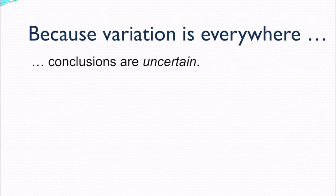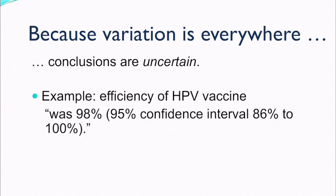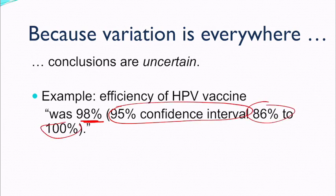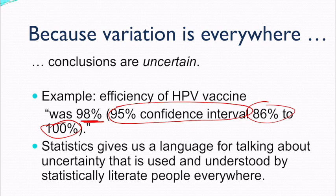Because variation is everywhere, we need to keep in mind that conclusions can be uncertain. For example, the efficacy of the HPV vaccine was 98%, but when we construct a confidence interval, it has a much wider range. So you have to be careful because it varies with population. Statistics gives us a way to talk about uncertainty that is used and understood by statistically literate people everywhere.